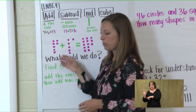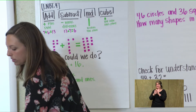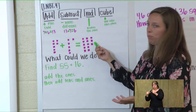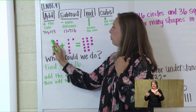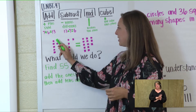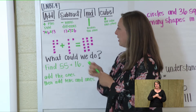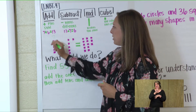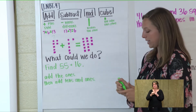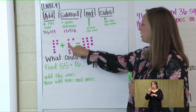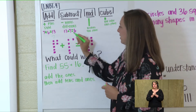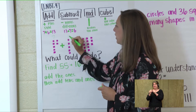Look at this example. I have cubes, cubes, and more cubes. Let's count them: 1, 2, 3, 4, 5, 6, 7. I have 7 cubes, the plus symbol, and then these cubes. Let's count them: 1, 2, 3, 4, 5, 6. That group was 6 cubes.